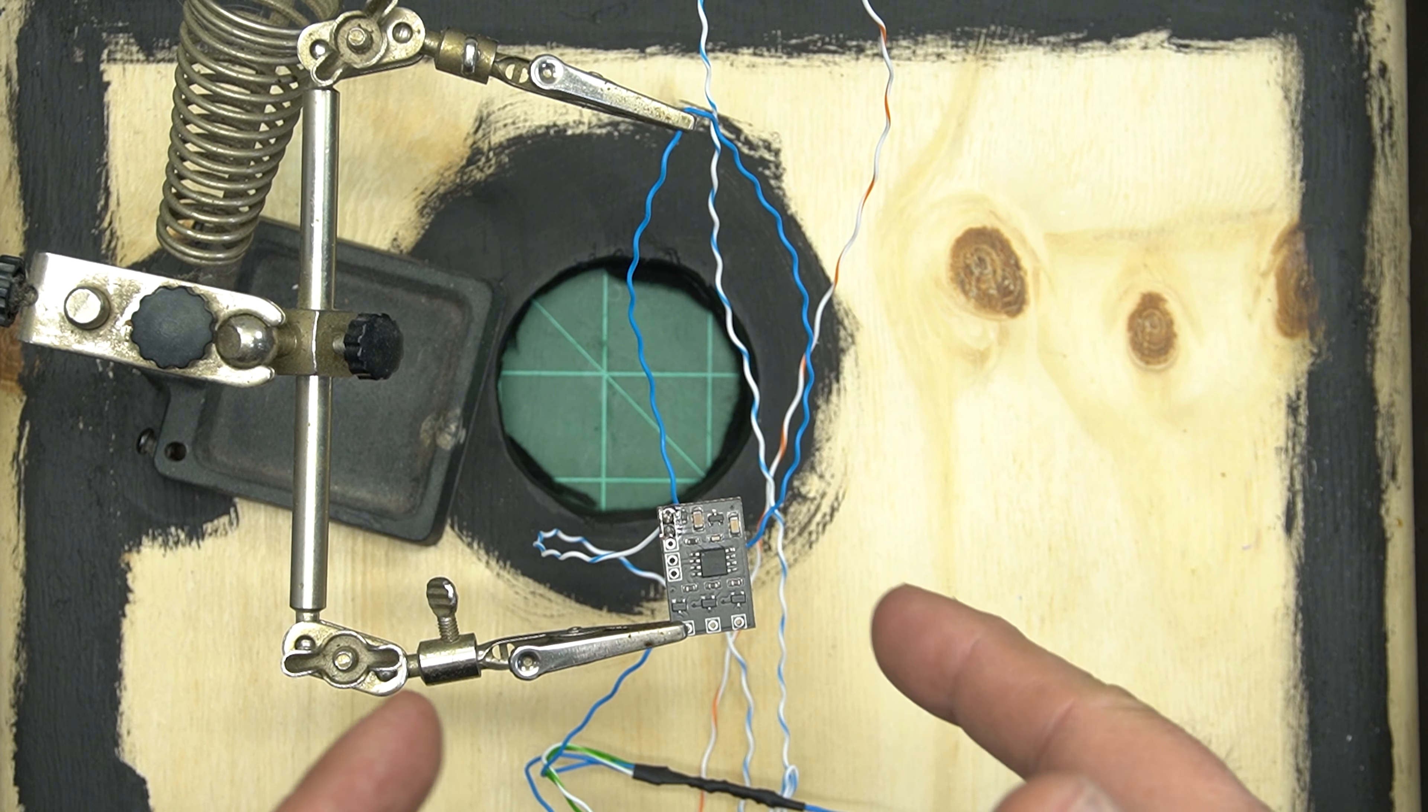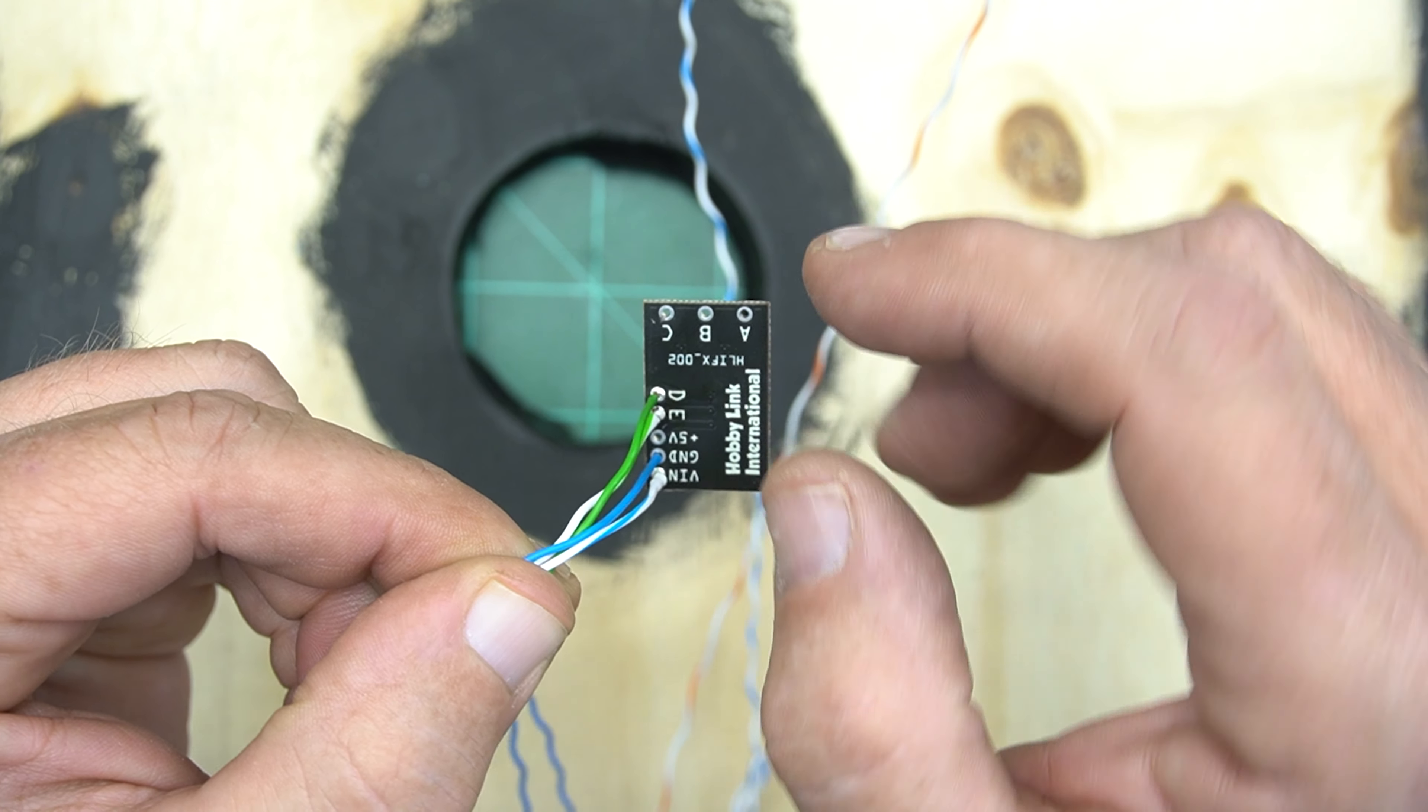Here is where I get to start playing with the good stuff. The FX board from Hobby Link International. We're going to have to put a bunch of wires on here. Power, ground, three effects and two jumpers.